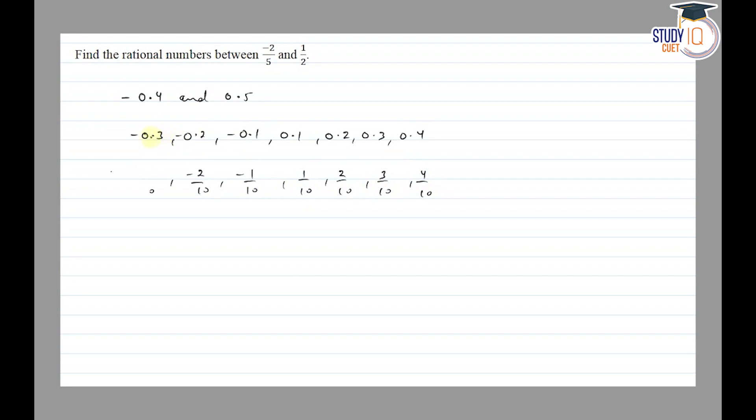There can be many more numbers like -0.31, 0.32, and so on. We can write infinitely many rational numbers between -2/5 and 1/2. Thank you.